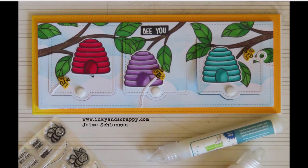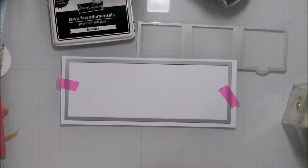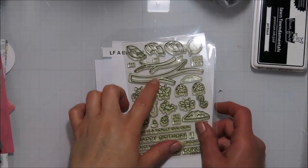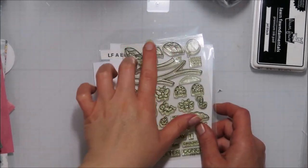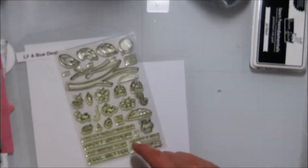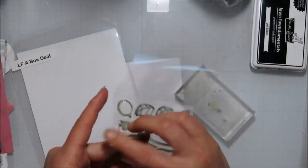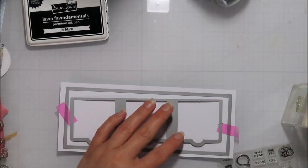This one is a lift the flap card. I'm going to start by die cutting my panel out with the second largest slimline die from Lawn Fawn and then I'm going to bring in the a bug deal stamp set for those branches and the leaves there.